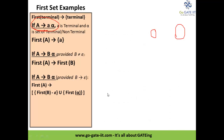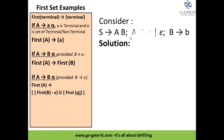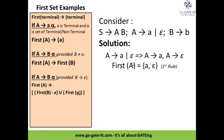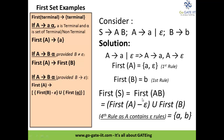Now consider one more example — the same example but with epsilon rules. Now first of A becomes {a, epsilon} and first of B remains {b}. For first of S, we calculate first of AB. Since first of A contains epsilon, we negate epsilon from first of A and union it with first of B, giving us {a, b}. So first of S is {a, b}.